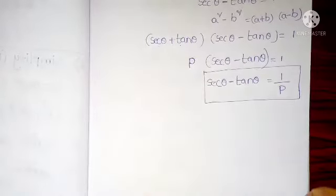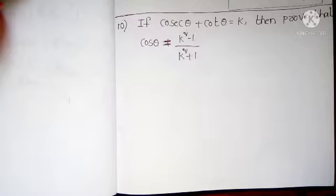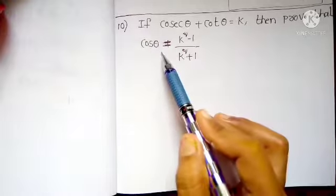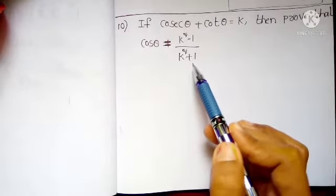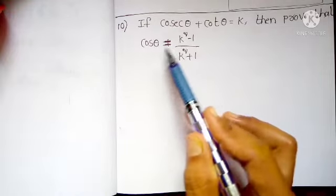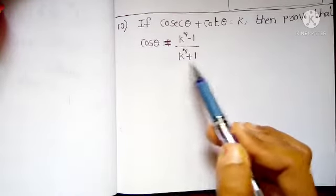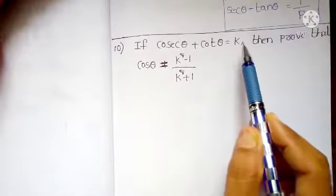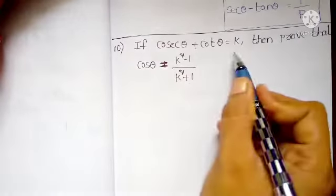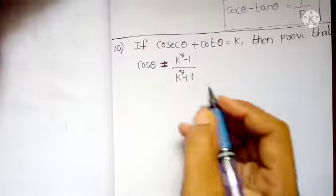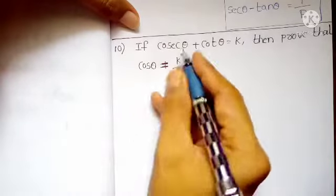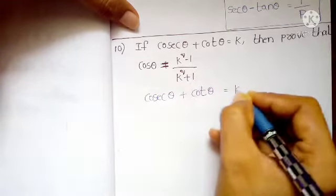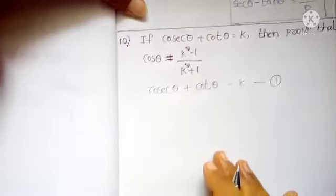Next, the 10th question. See the 10th sum. Cosecant theta plus cot theta equals K. Then prove that cos theta equals K squared minus 1 by K squared plus 1. We need to prove cos theta equals K squared minus 1 by K squared plus 1, given cosecant theta plus cot theta equals K. Let us take cosecant theta plus cot theta equals K. This is equation 1.